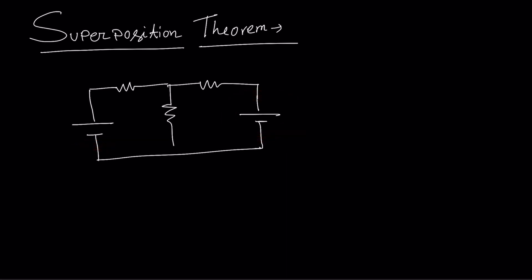Suppose this resistance is R1, this resistance is R2, this resistance is R3, and this voltage source is V1 and this voltage source is V2. We need to find the current I flowing through the resistance R3. So, the superposition theorem says we need to take only one source at a time.